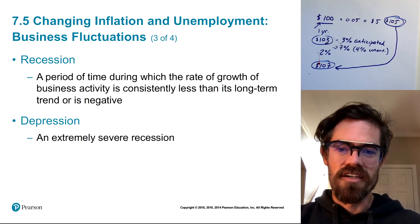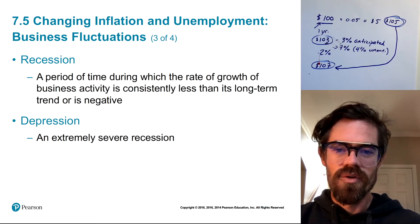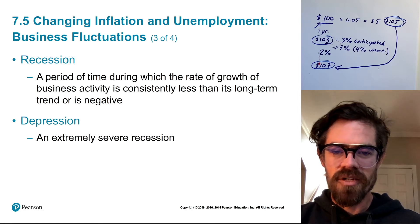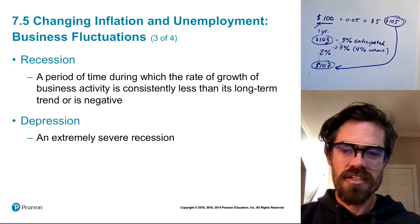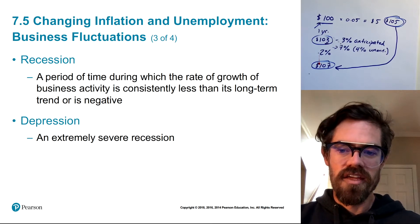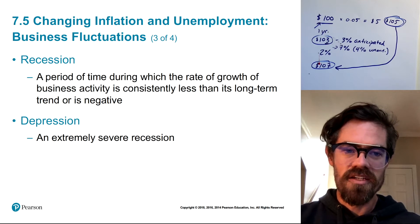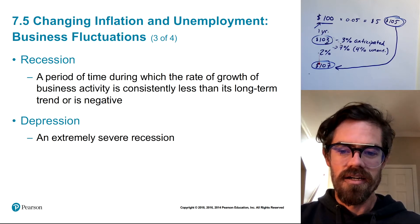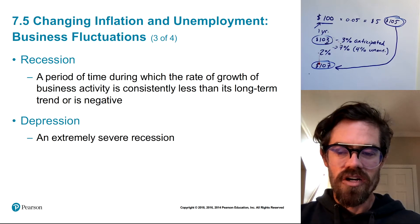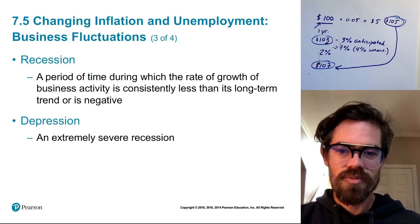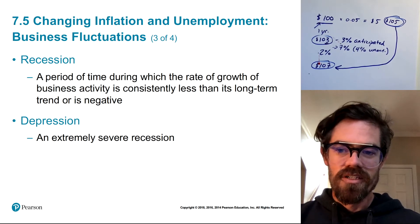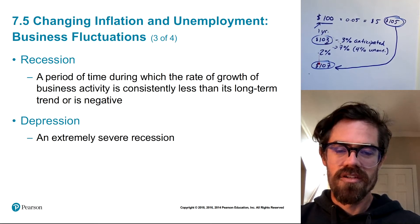Anytime we have a very severe recession, we refer to that as a depression, and there's really only ever been one in the economic history of the United States. Although if things were to get really bad with this coronavirus situation, we could feasibly go into a second depression. Hopefully our government is taking the appropriate actions to prevent that, but it is possible, and we'd be in for some tough times.